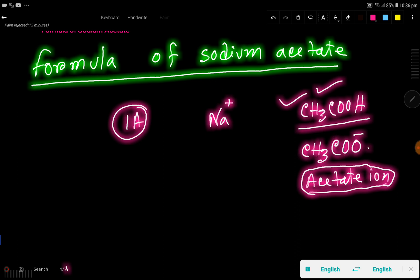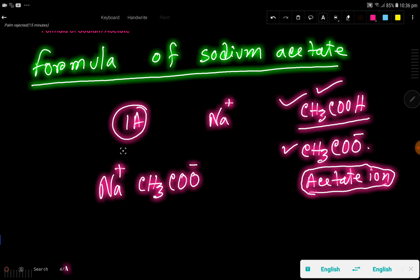Sodium acetate - so at first you have to write this ion, sodium ion, then here acetate ion CH3COO minus. Look, one positive charge will cancel one negative charge, so the formula will be like this.